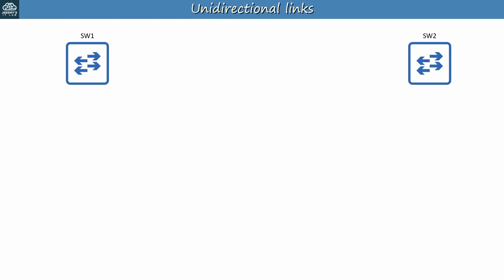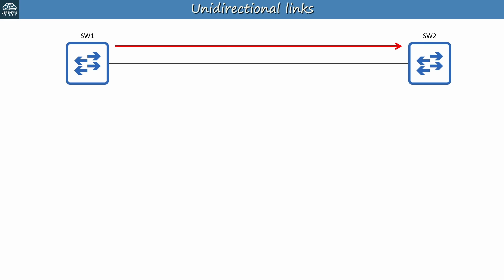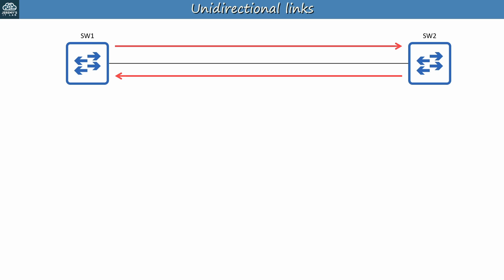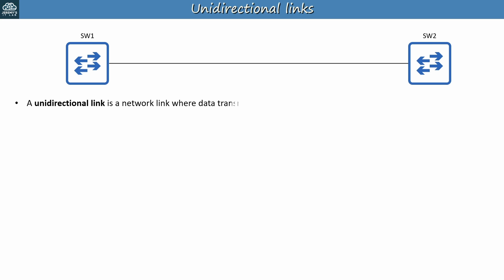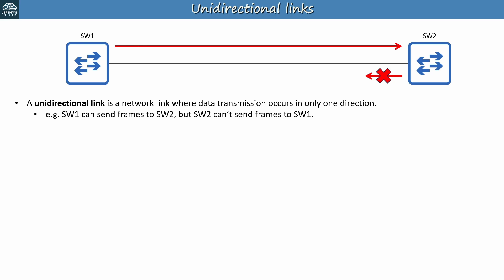So we've got these two switches, SW1 and SW2. Under normal circumstances this is a bidirectional link, meaning SW1 can transmit data to SW2 and SW2 can transmit data to SW1. But a unidirectional link is a network link where data transmission occurs in only one direction — for example, SW1 can send frames to SW2, but SW2 can't send frames to SW1. This is obviously not a desirable situation, and is typically caused by a Layer 1 issue, some physical problem with the hardware preventing data from flowing in one direction.